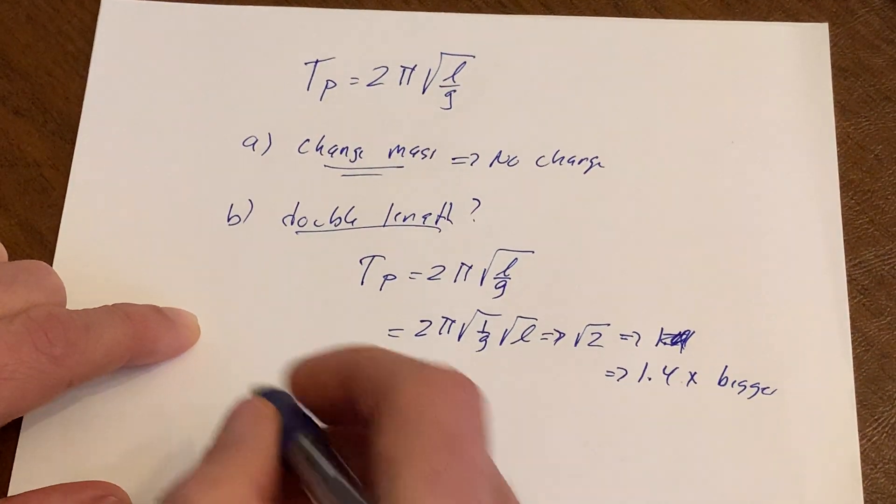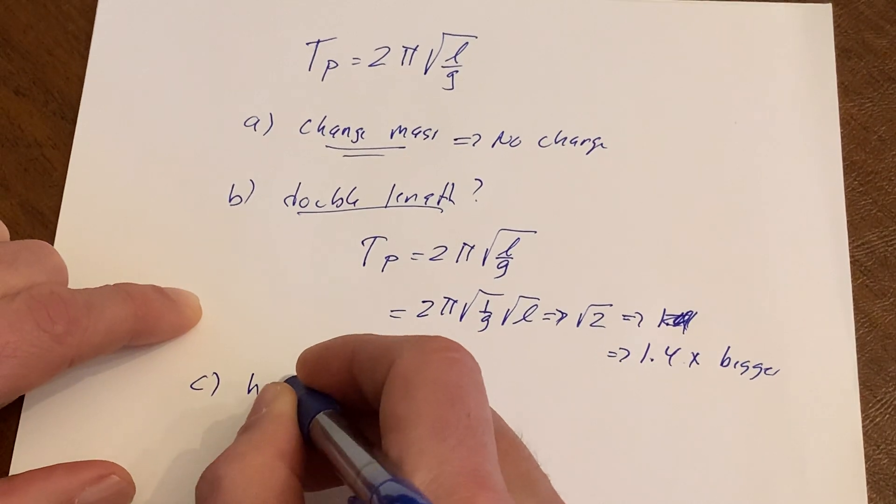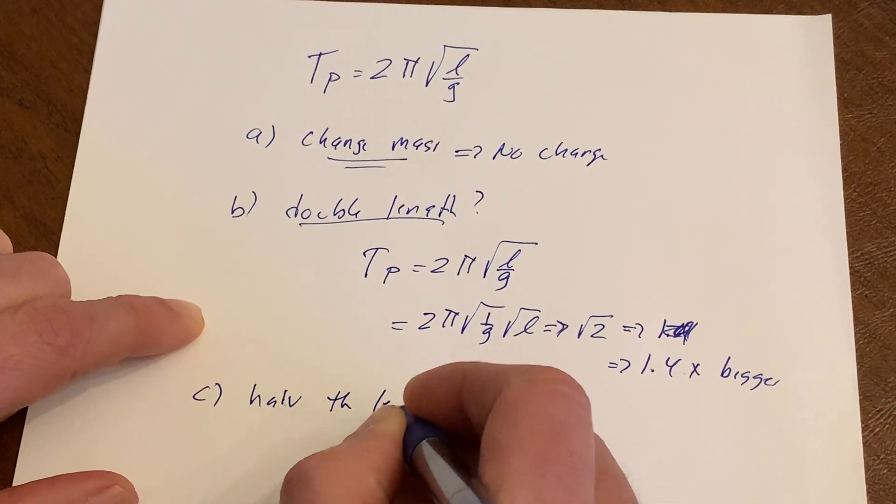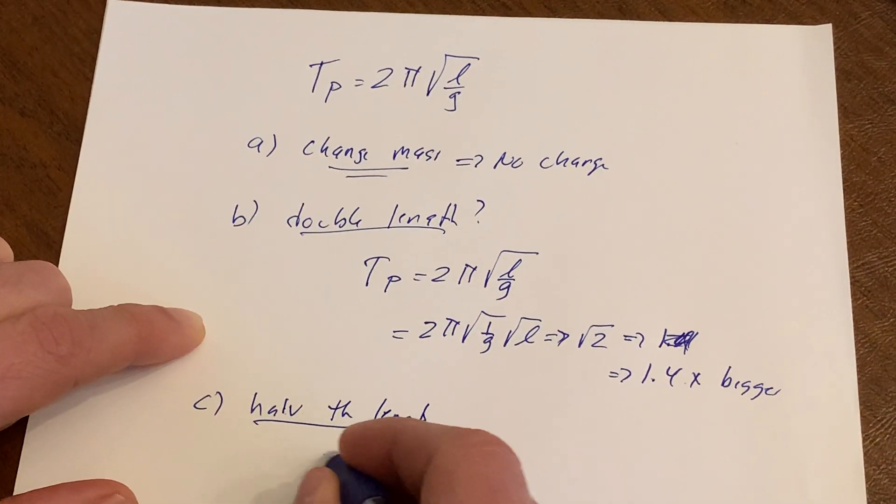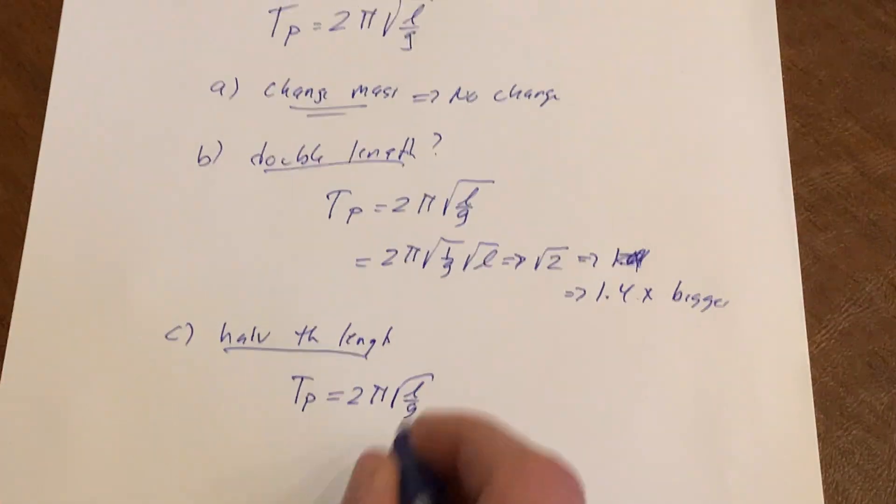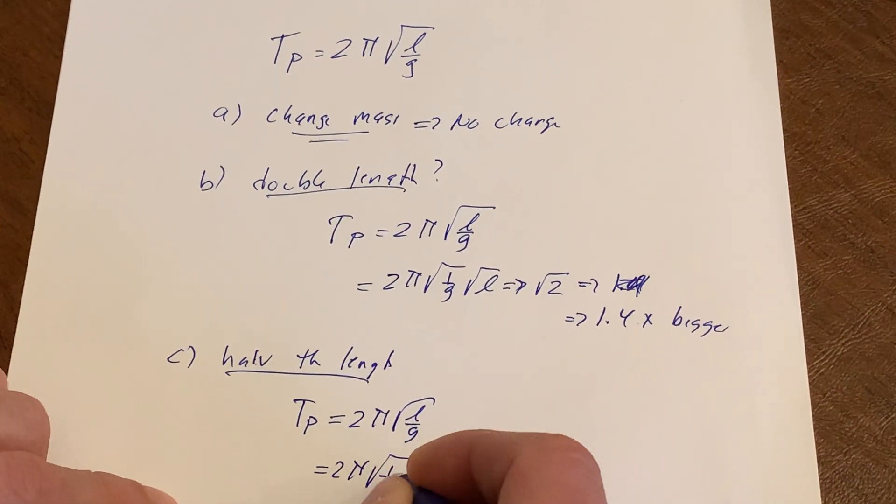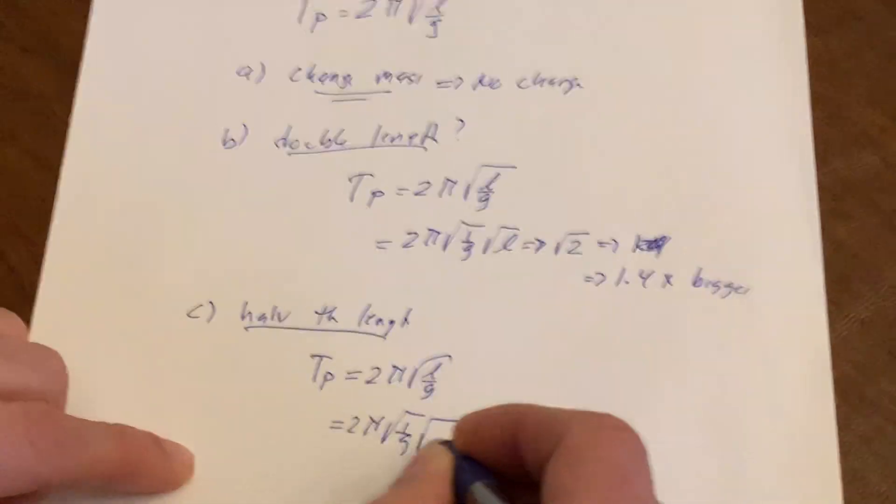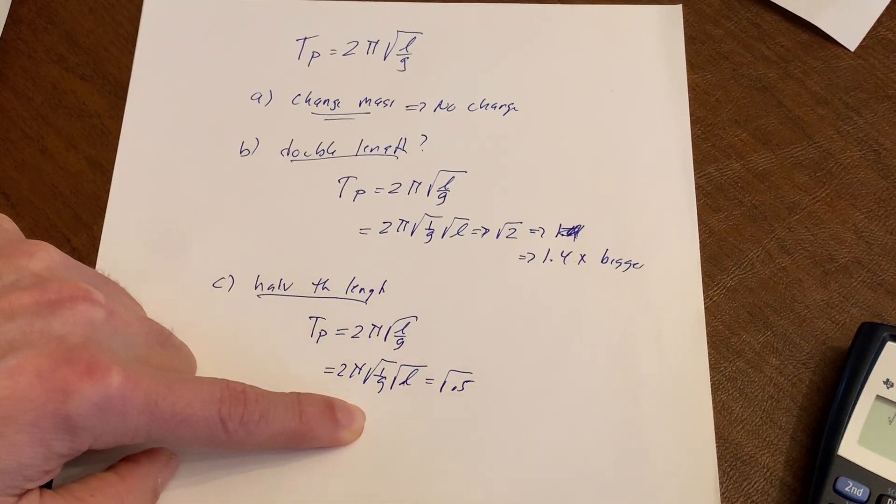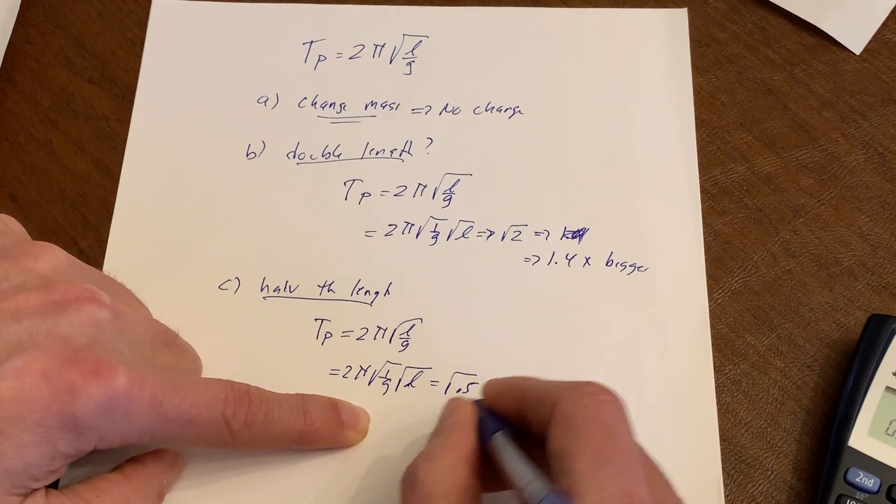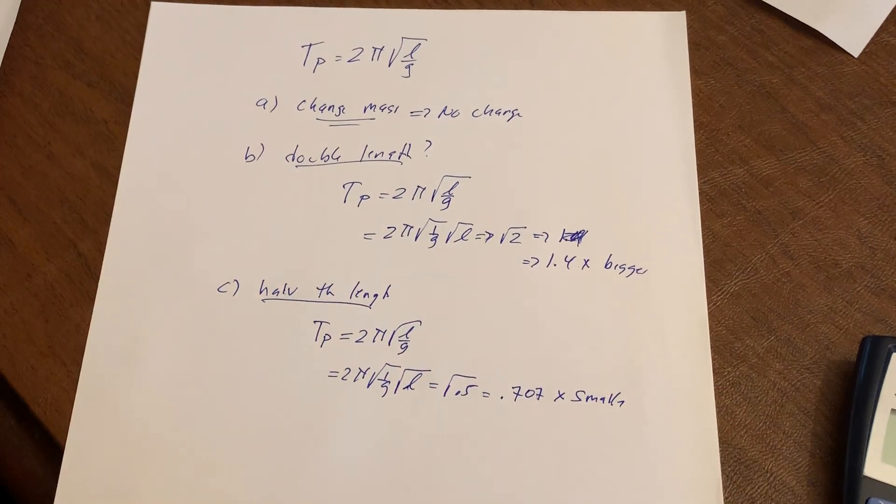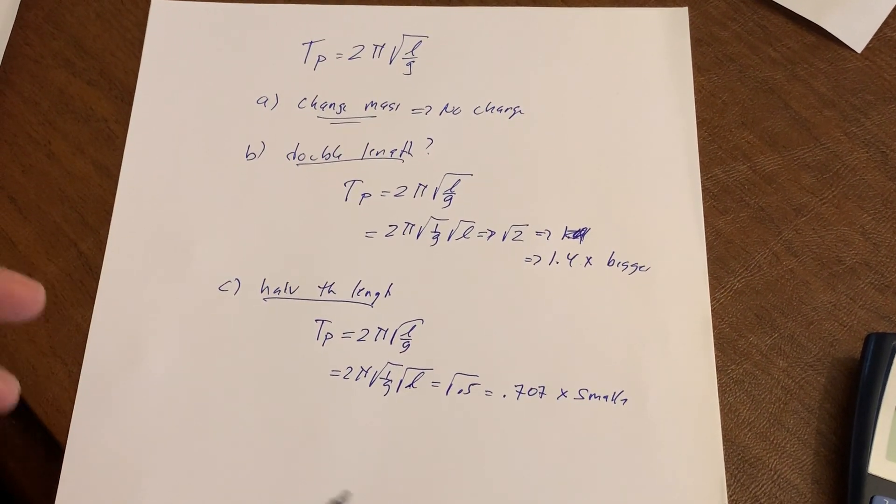What else can we do? Well, I can make the length bigger. What else can I do? Well, let's half the length. What happens then? Period of pendulum, 2 pi radical L over G. Well, let's separate this again. 2 pi 1 over G radical L. Length. And let's half it. So what happens if I half the length? 0.5. Look at this. The period goes to 0.707 times smaller. So really what that means is as the length gets smaller, the period gets smaller. The frequency gets bigger.